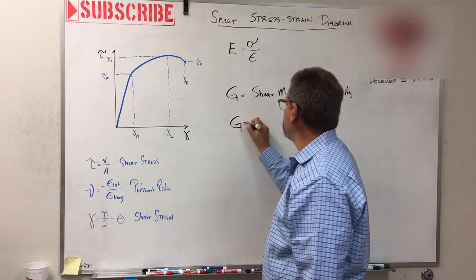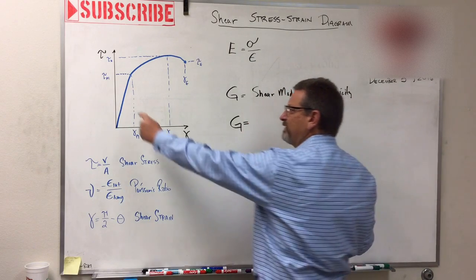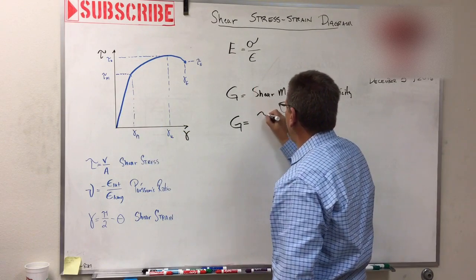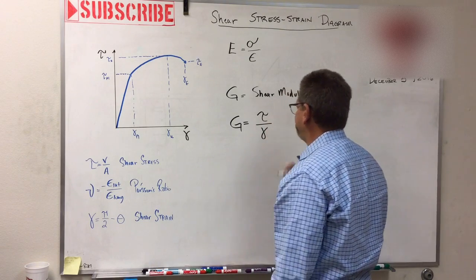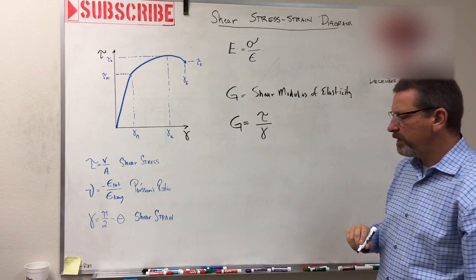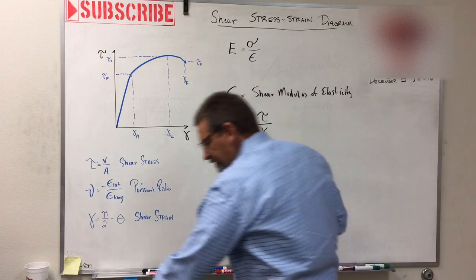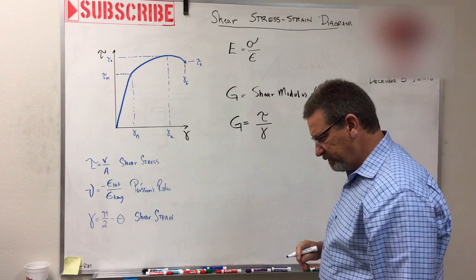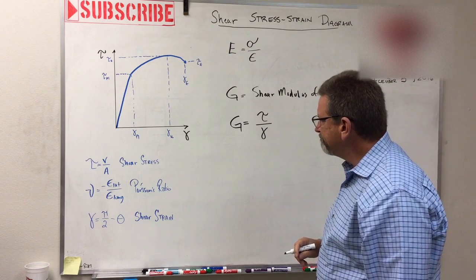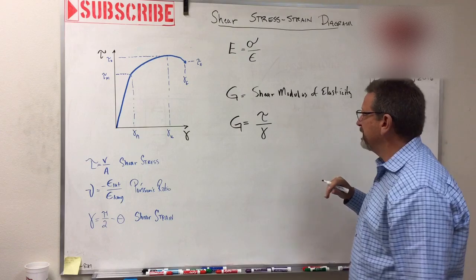So the shear modulus of elasticity is calculated just like that guy—it's rise over run, the slope of the line. So G, that shear modulus, is equal to rise, which is tau, divided by the run, which is gamma. So that's the equation that you can derive from the shear stress-strain diagram.